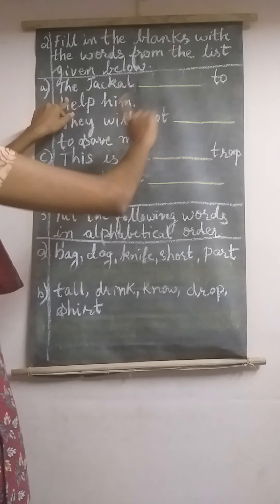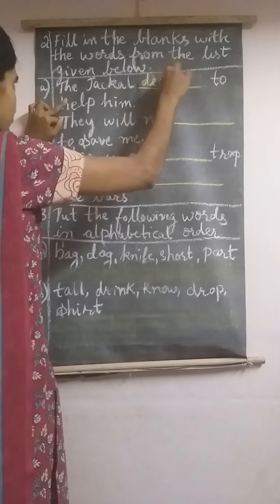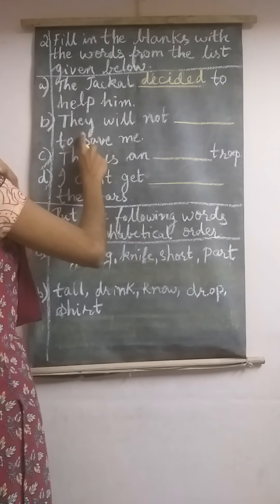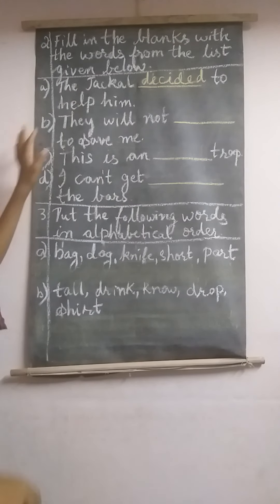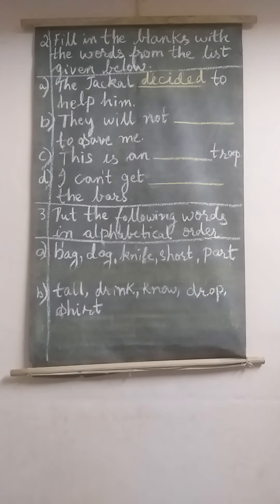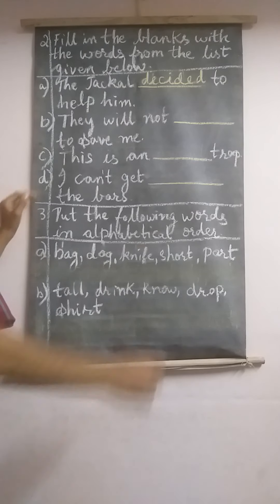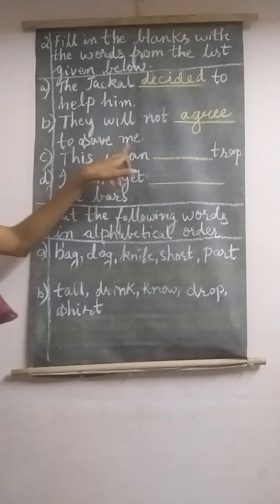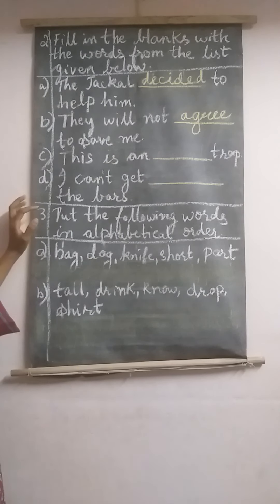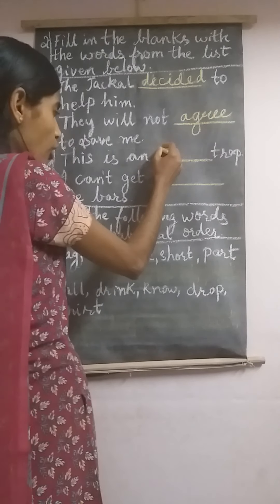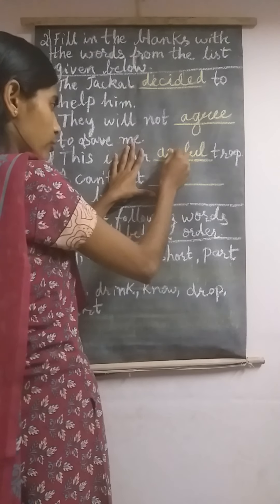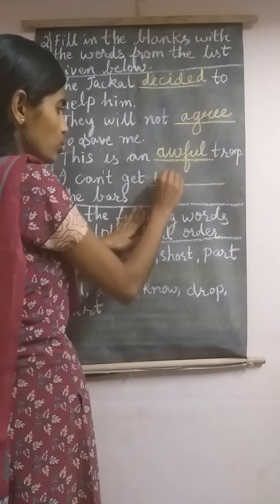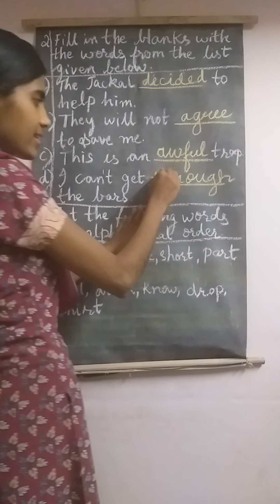For 'The jackal dash to help him,' the answer will be 'decided' — the jackal decided to help him. Next: 'They will not dash to save me' — the answer is 'agree' — they will not agree to save me. Next: 'This is an dash trap' — the answer is 'awful' — this is an awful trap. A-W-F-U-L, awful. And: 'I can't get dashed the bars' — the answer is 'through' — I can't get through the bars.